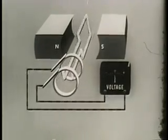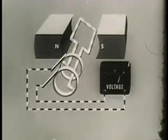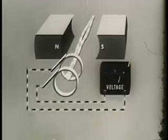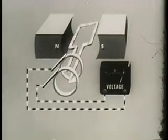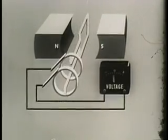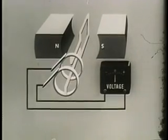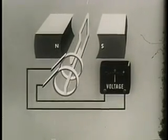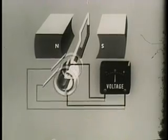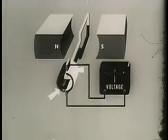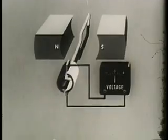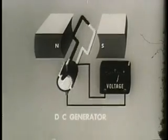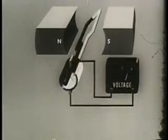What you have seen so far is really the theory and operation of a basic AC generator. But our purpose was to explain the principles of operation of a DC generator. To get direct current, we will attach each end of the conductor to a segment of copper forming a commutator. Now our machine is a DC generator. The commutator rotates with the loop.